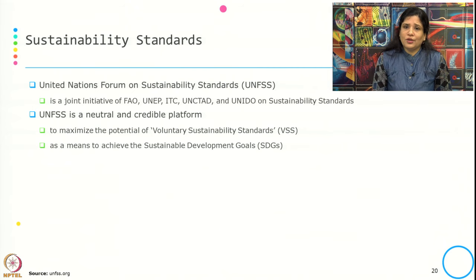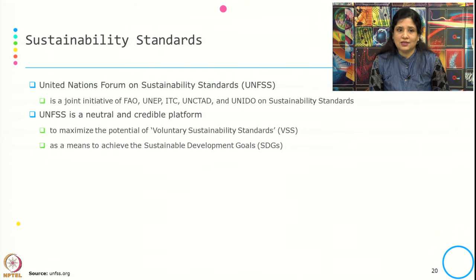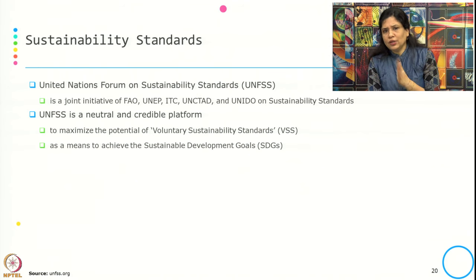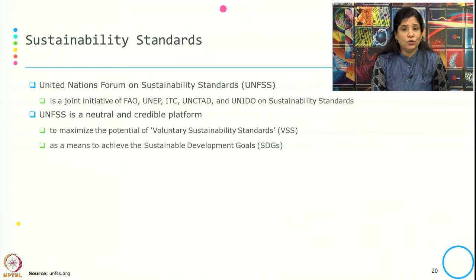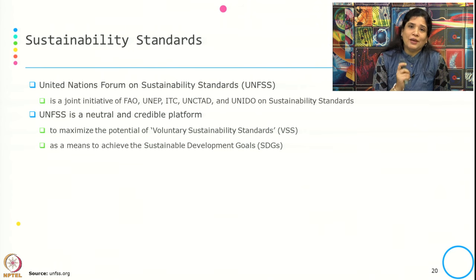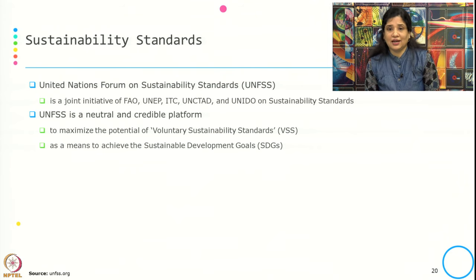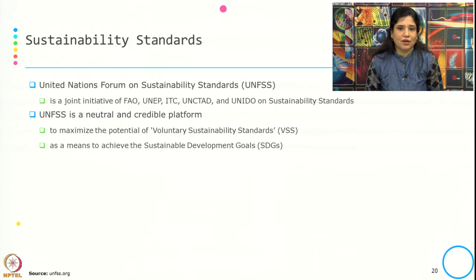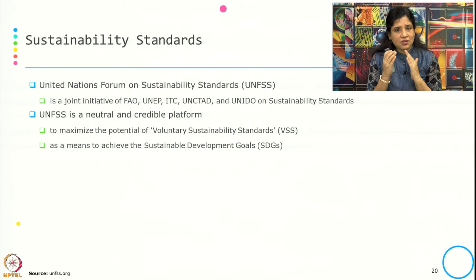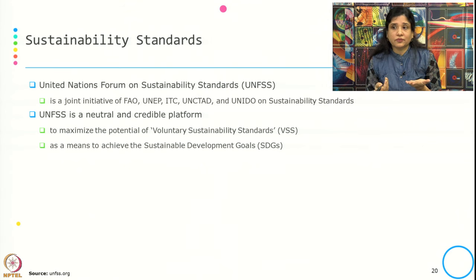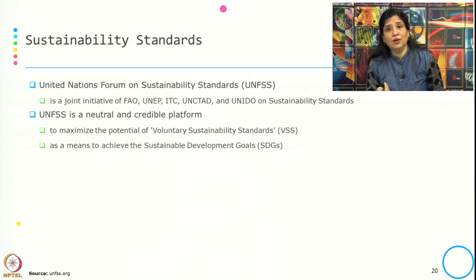There is a United Nations Forum on Sustainability Standards known as UNFSS. It is a joint initiative of FAO, UNEP, ITC, UNCTAD, and UNIDO on sustainable standards. This is a neutral and credible platform to maximize the potential of voluntary sustainability standards (VSS) as a means to achieve the sustainable development goals. We have just selected a few standards — Rainforest Alliance, Fair Trade, Organic, and Sustainable Tourism — to understand their relevance.